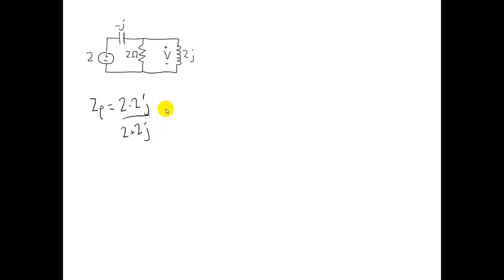To simplify this expression, I'm going to multiply the top and bottom by the complex conjugate of the denominator. To do the math, you'll see that this turns out to be 8 plus 8J over 8 ohms, which reduces again to 1 plus J ohms.